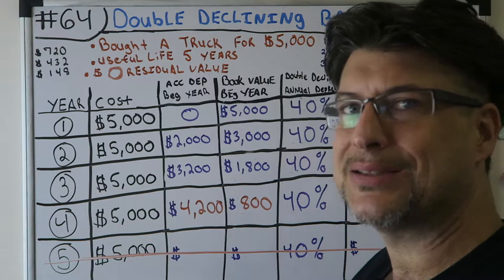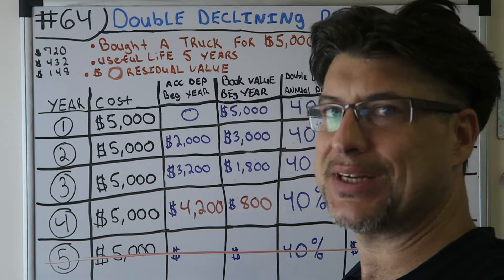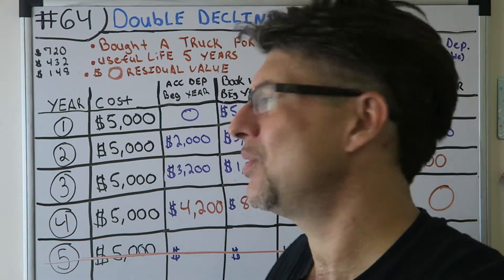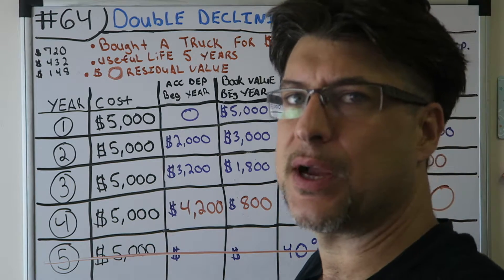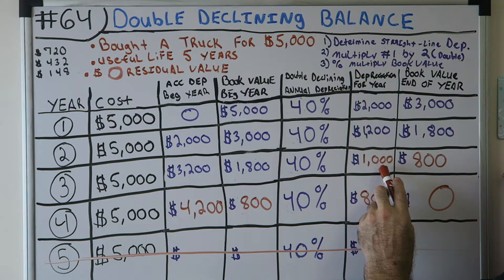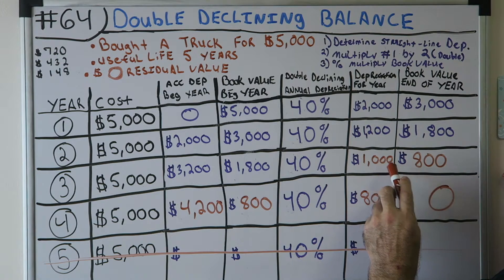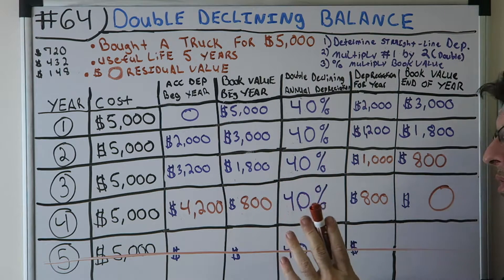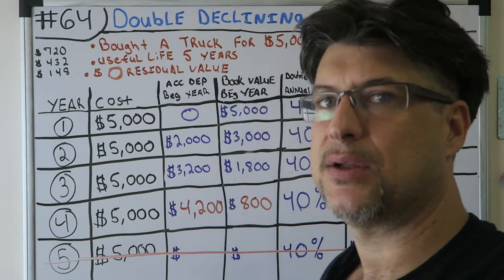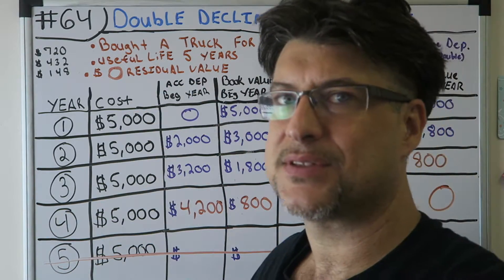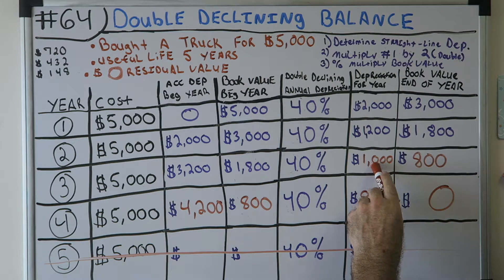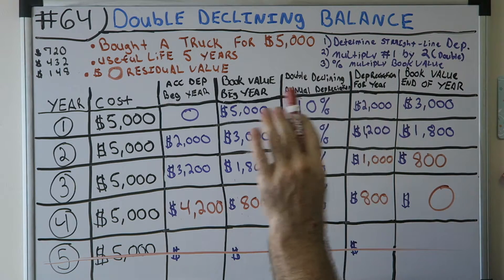You might ask: how is that accelerated if I could just take straight line and take a thousand? That's the point — we want to take that thousand instead of the 720. We have the option to take the higher of the double declining balance amount or the straight-line amount. So we take a thousand dollars depreciation in year three, not the 720.